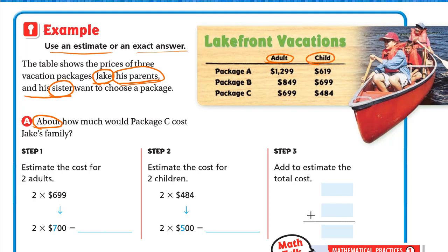For package C, the price is $699 for the adult and $484 for the child. Step one: estimate the cost for two adults — the parents. So it's 2 times $699. Let's round to the nearest hundred.